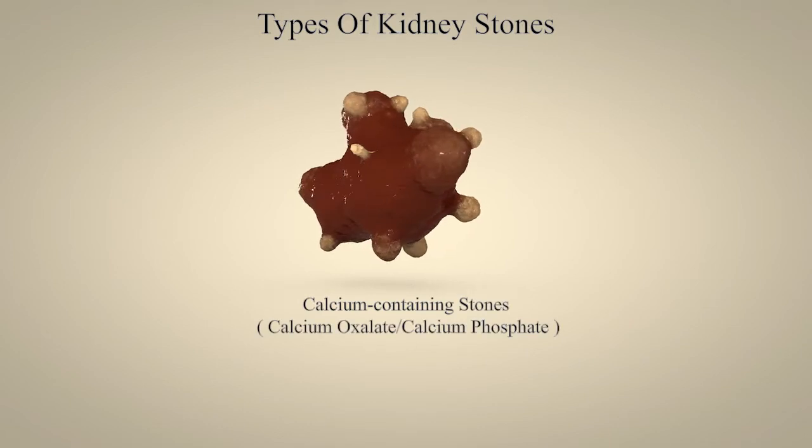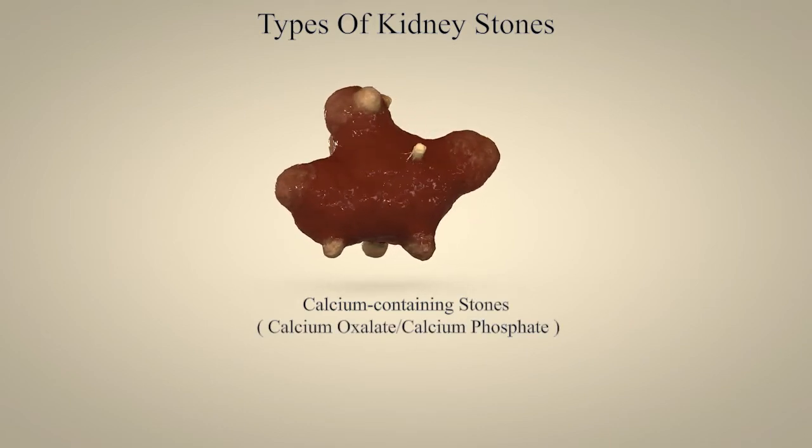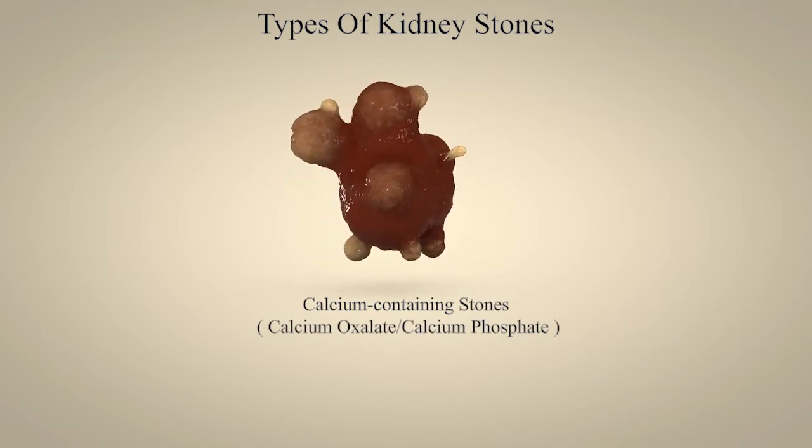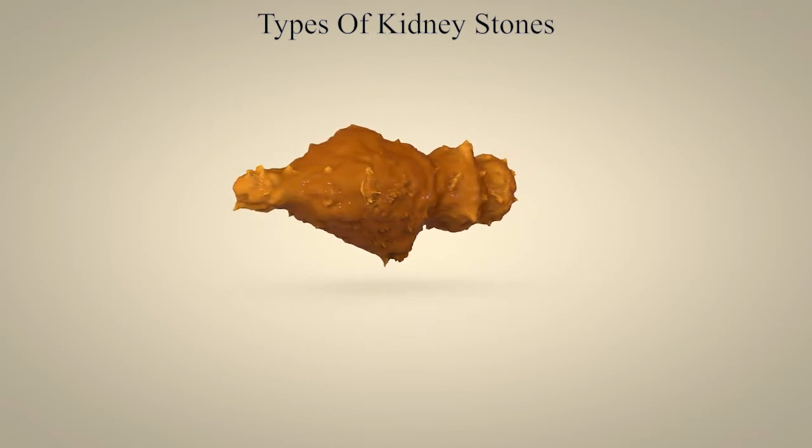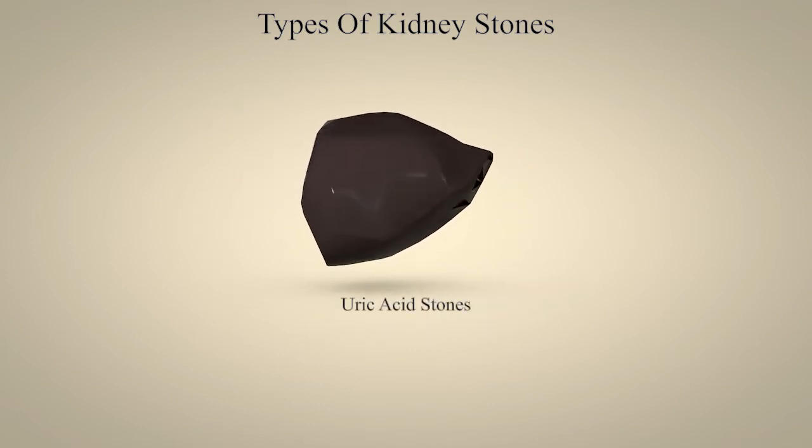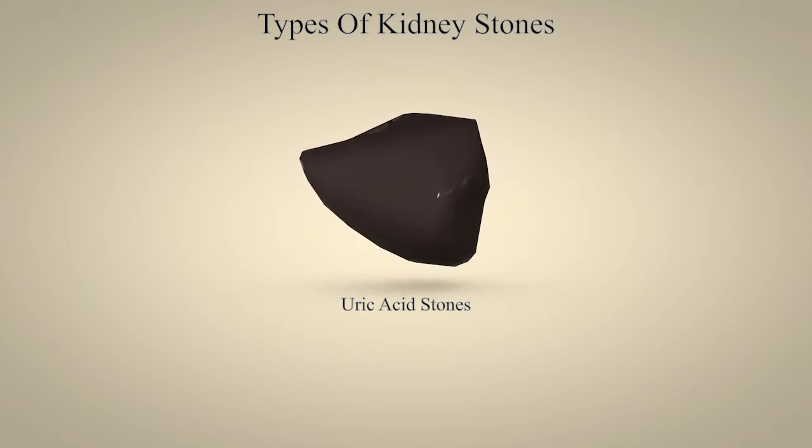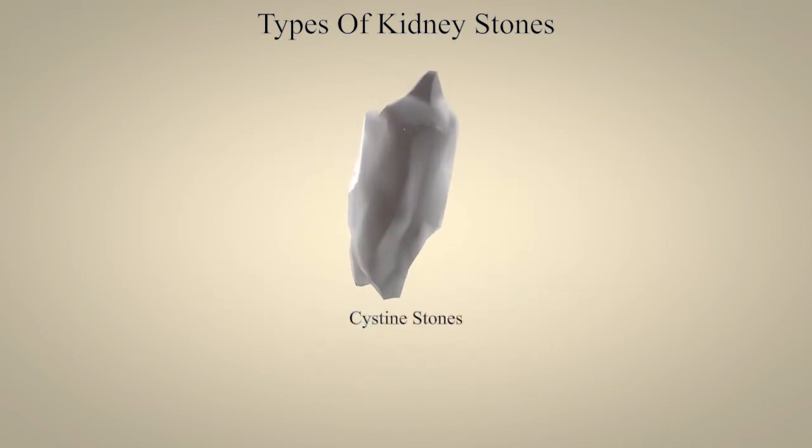Calcium containing stones include calcium oxalate or calcium phosphate. Magnesium ammonium phosphate, also called struvite or staghorn stones. Uric acid stones and cysteine stones.